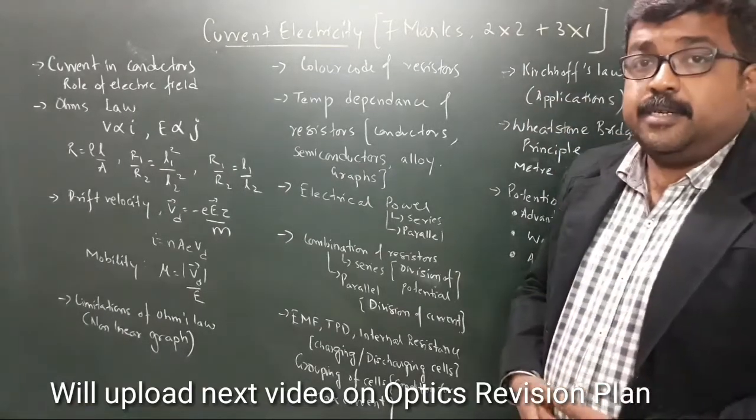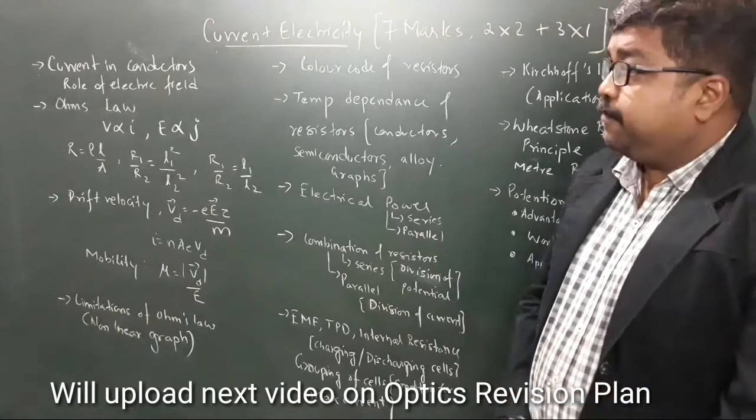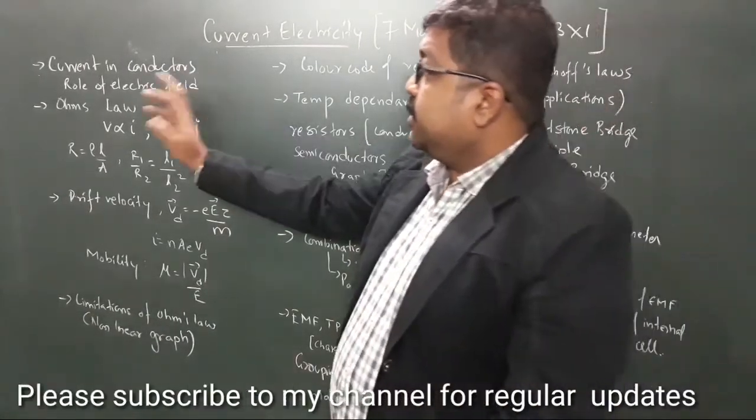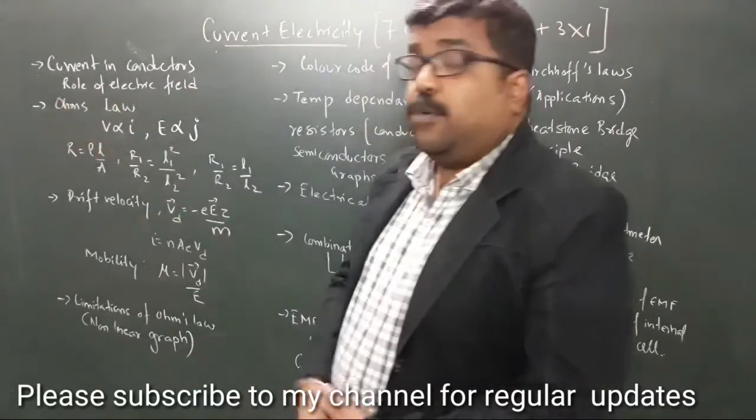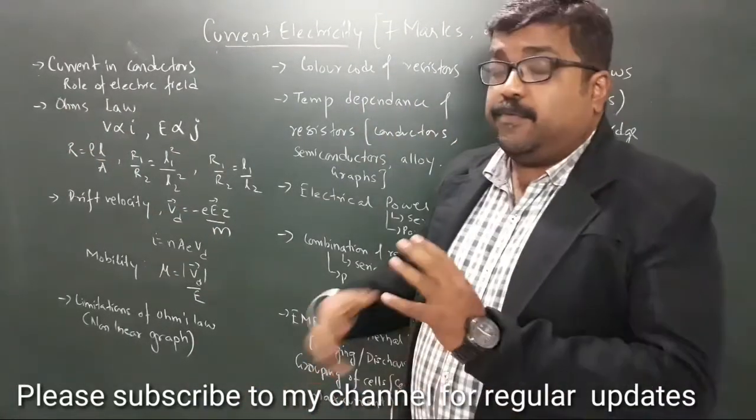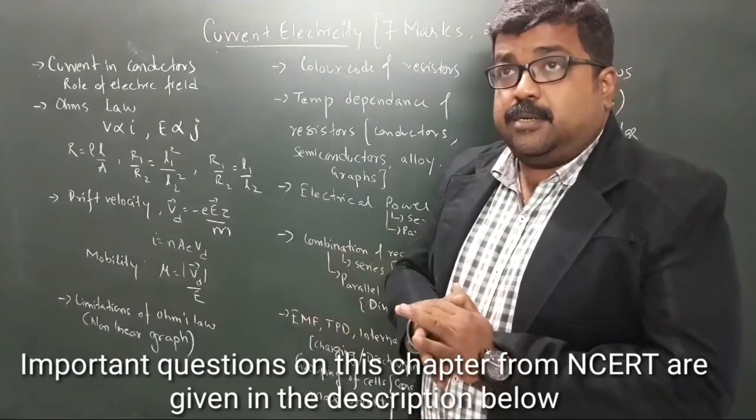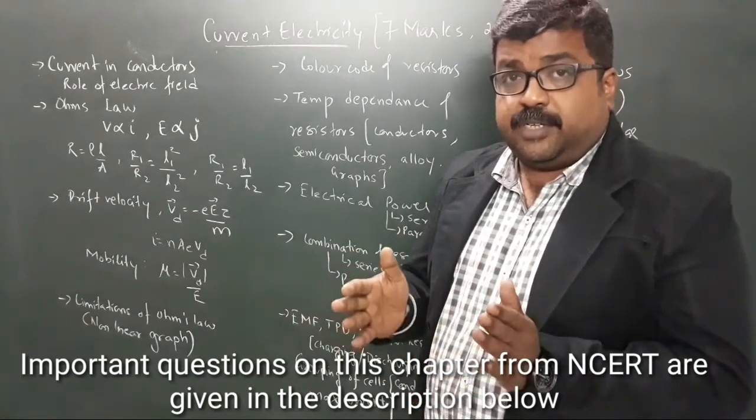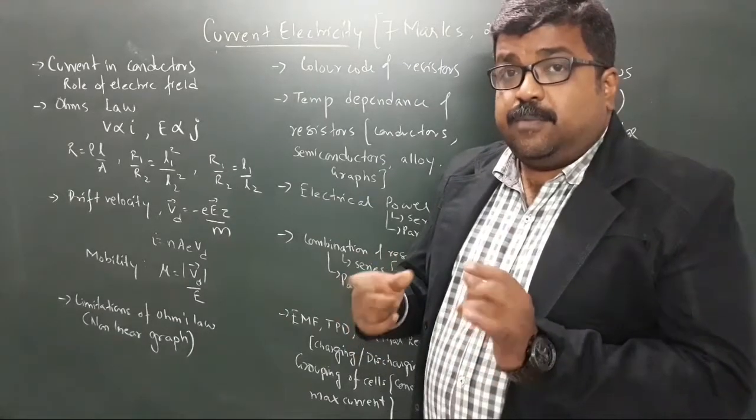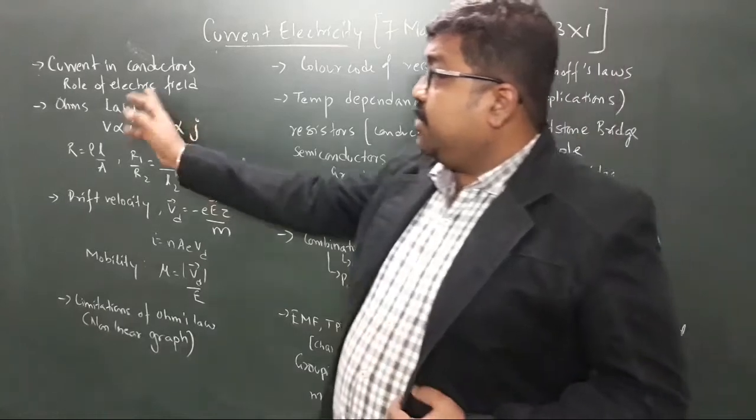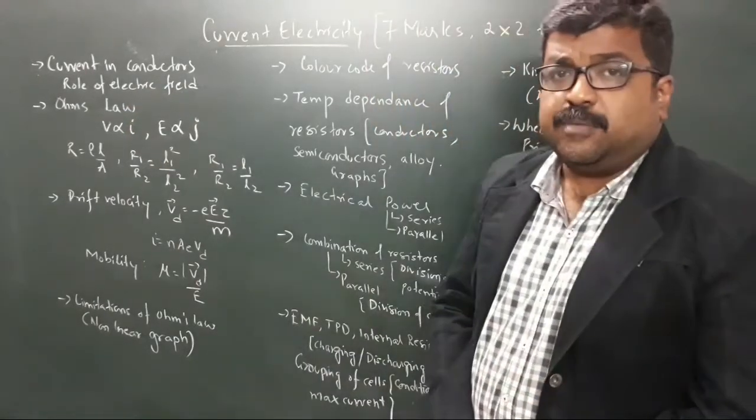This chapter starts with flow in conductors and the role of electric field for the motion of charge. As we know, in any conductor, current flows when there is a potential difference. This potential difference is set up when there is an electric field, so the chapter explains how this electric field is responsible for the motion of electrons.